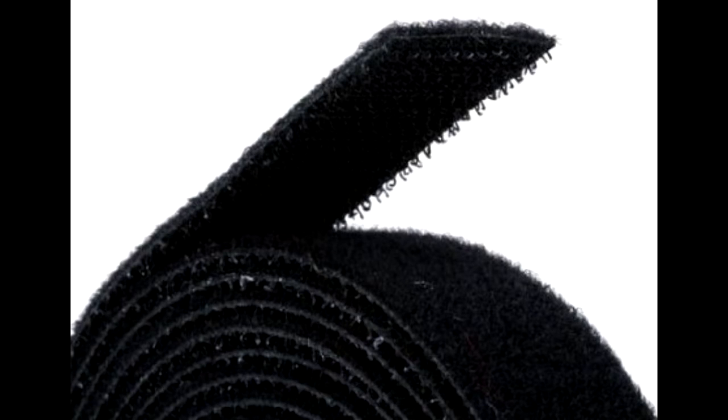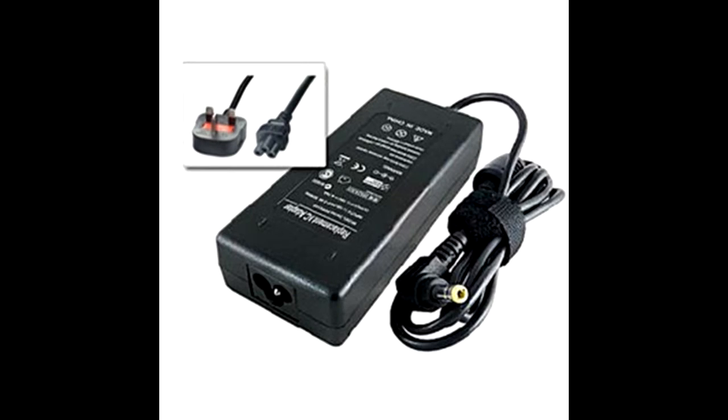Hook and loop fasteners is the material that you see on laptop chargers which is used to hold the wires together. We will be using that material here to hold the wristband when we wrap it around our hand.